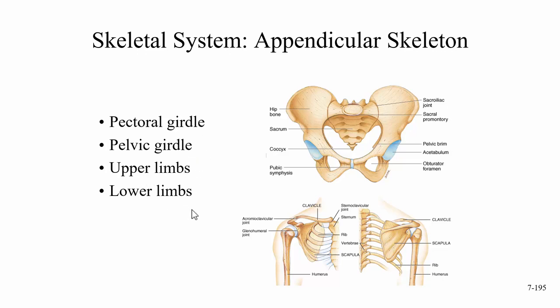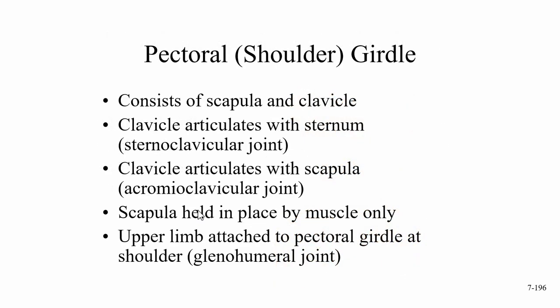Looking at the pectoral or shoulder girdle, it consists of the scapula (your shoulder blade) and the clavicle (your collarbone). The clavicle articulates with the sternum at the sternoclavicular joint, and the clavicle articulates with the scapula at the acromioclavicular joint. We'll see these structures again shortly.